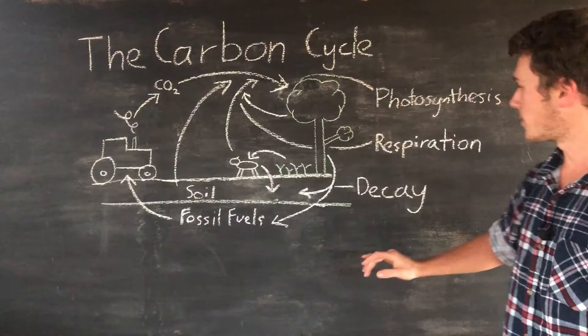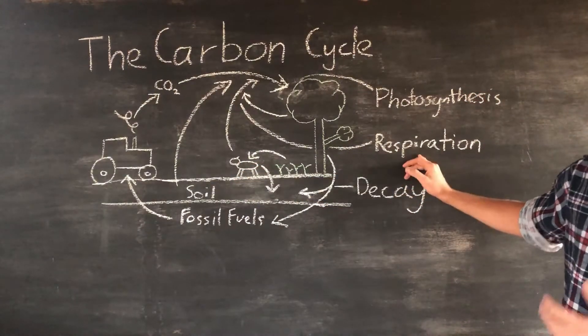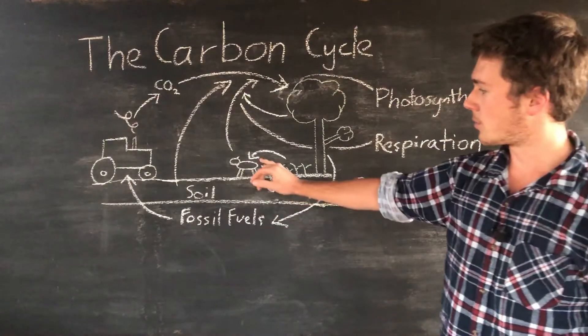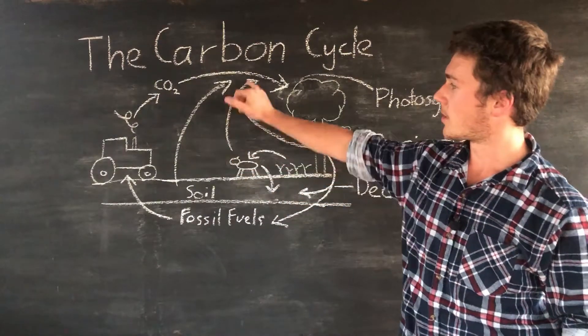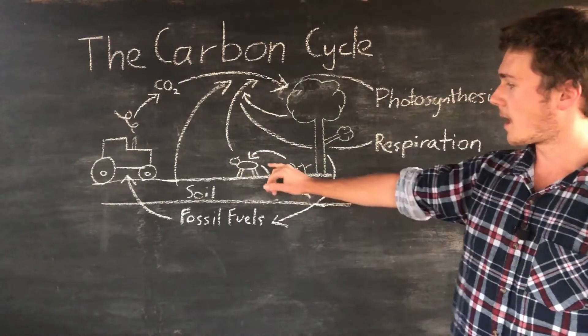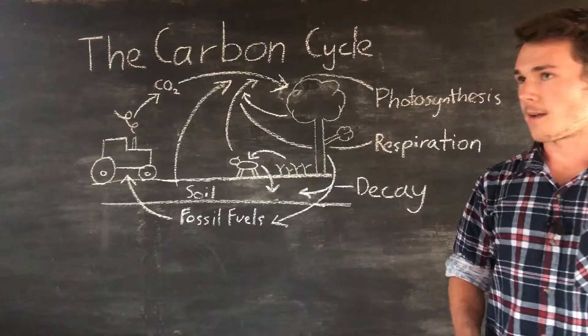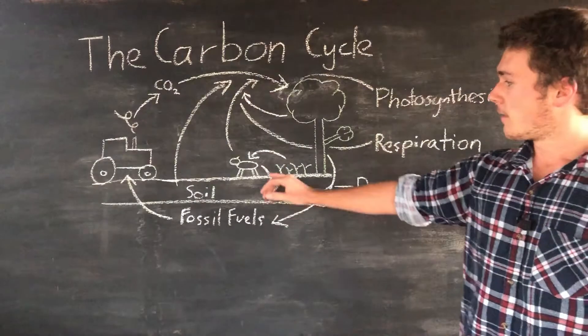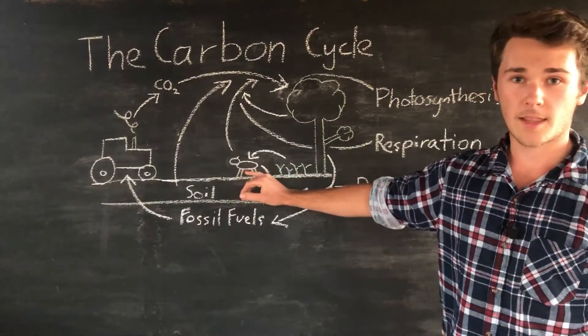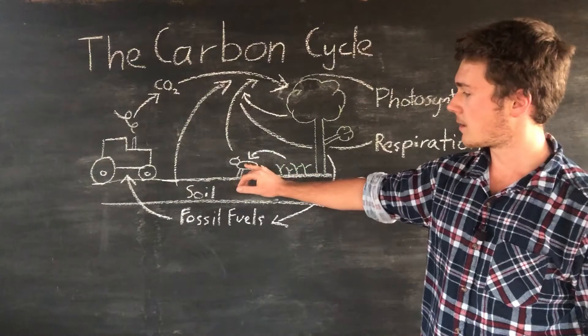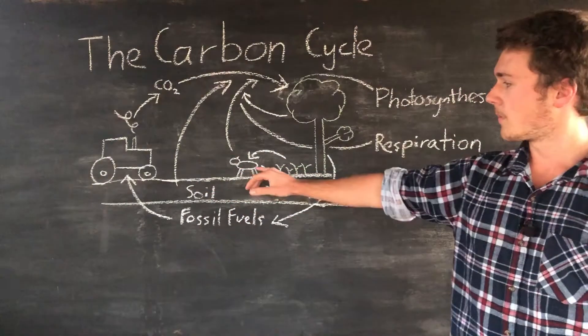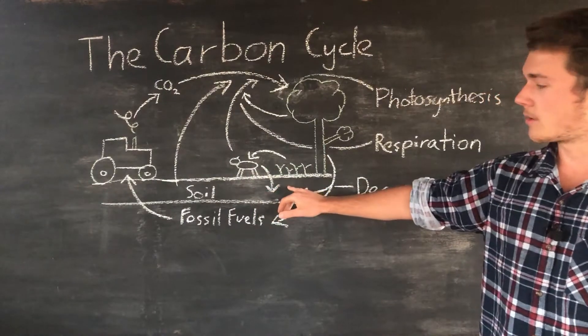The animal then can use it for its own metabolic reactions, so respiration which means the carbon goes back into the atmosphere, or it can be used for the animal in its growth and development. From here it can be eaten by another animal or the animal can die and go into the soil.